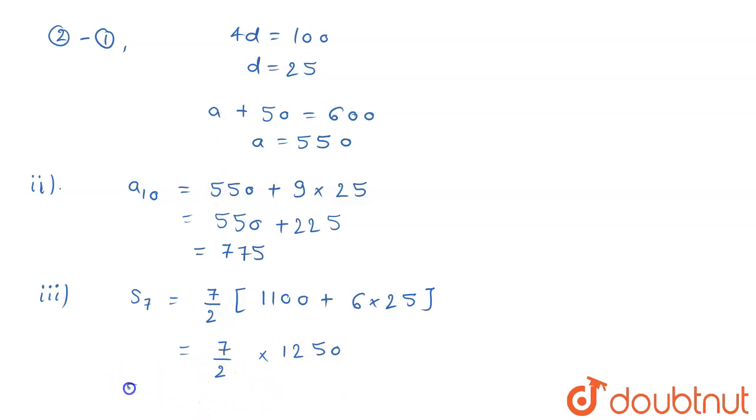So if you simplify this, it turns out to be S_7 equals 4375 sets. And this is the answer of part 3.